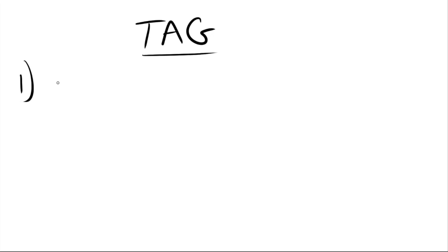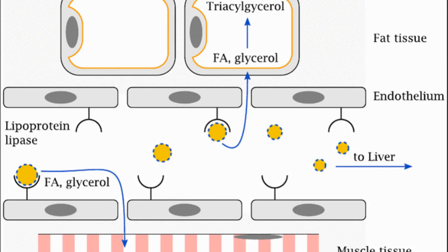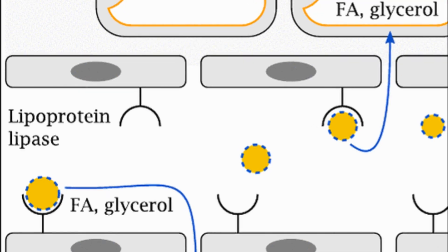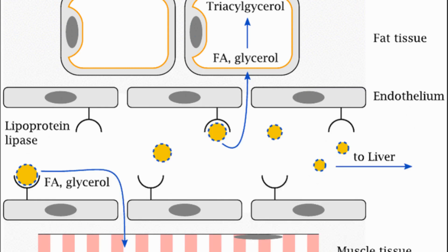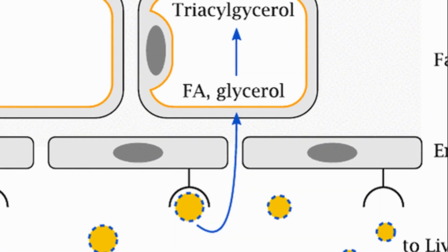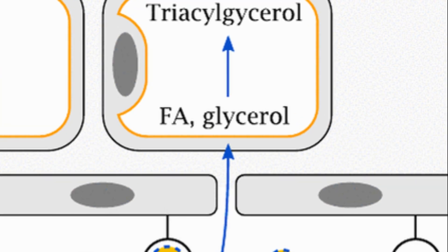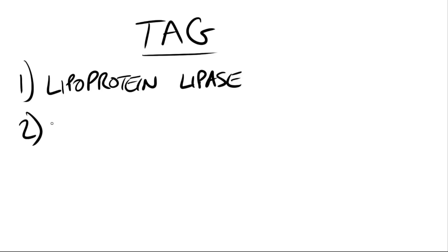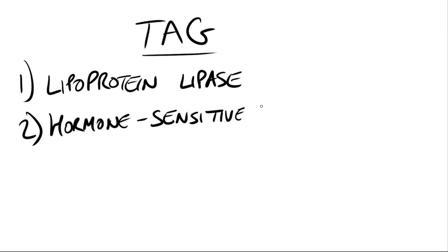The fatty acids are usually not of the same type: carbon one is typically saturated, carbon two is typically unsaturated, and carbon three can be either. Lipoprotein lipase is the enzyme which binds the chylomicrons and extracts the triacylglycerol from them, cleaving it into fatty acids and glycerol in order for them to enter the adipose tissue. As mentioned earlier, this is activated by ApoC2 on circulating lipoprotein particles.